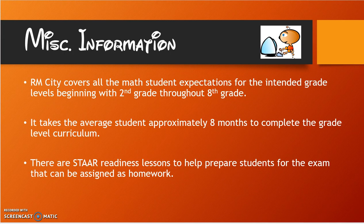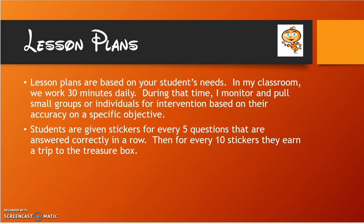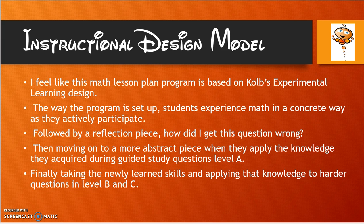As you can see, this is an amazing program for kids to use. Some miscellaneous information: RMCity covers all math student expectations for intended grade levels from beginning to intermediate, grades 2 through 8. It takes students approximately 8 months to complete a grade level curriculum. There are also STAR readiness lessons to help students prepare for STAR. Lesson plans are based on your students' needs. While I used it in my classroom, we would work 30 minutes a day, during which I would monitor and pull small groups or individuals for intervention based on their accuracy at a specific grade level. Students were given five stickers for every five correct answers in a row.